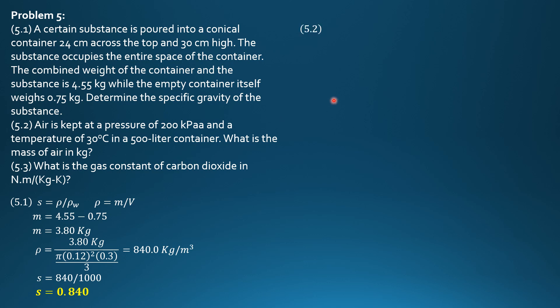Mass of air equals density of air times volume of air. The volume of air is already known, 500 liters. So therefore, this is 0.5 cubic meter. The density of air is pressure divided by gas constant of air times absolute temperature, pressure over RT.